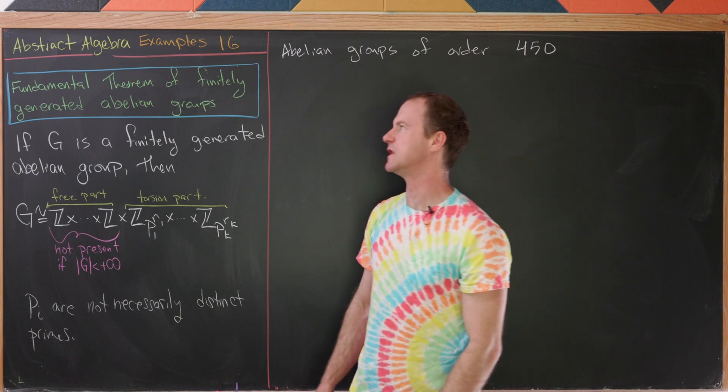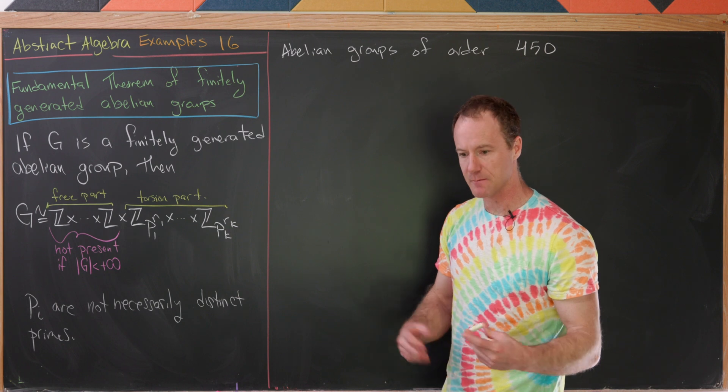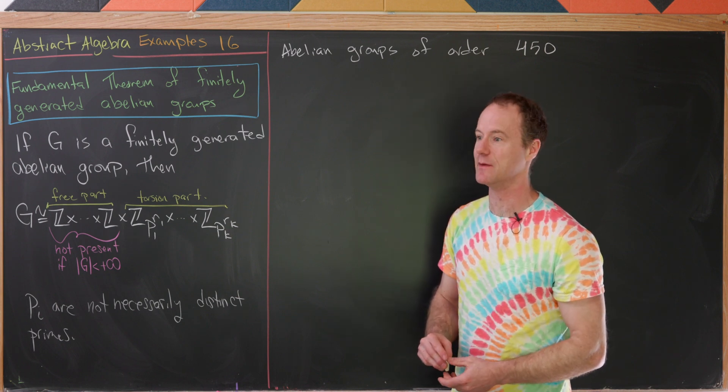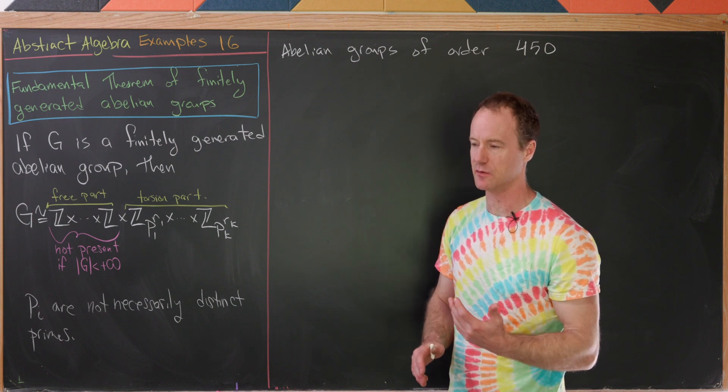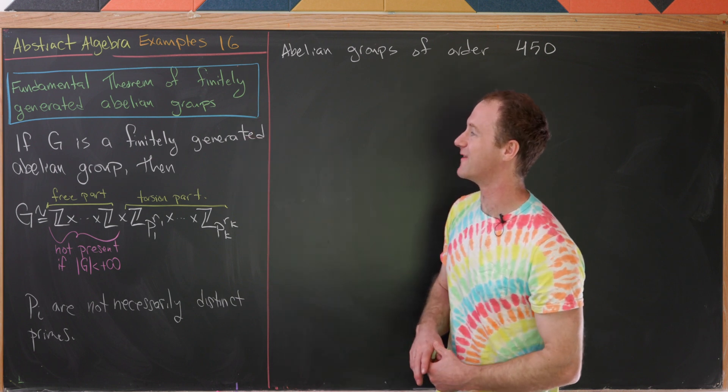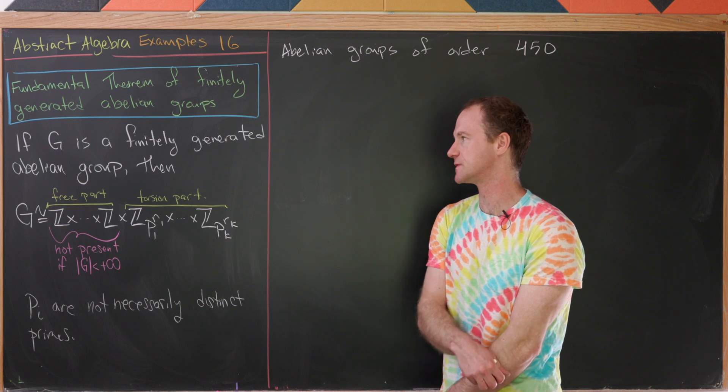This is the 16th example video on our series devoted to abstract algebra, and the main lecture video covered the fundamental theorem of finite abelian groups. Here we're going to extend that a little bit, without proof, to something called the fundamental theorem of finitely generated abelian groups, and then look at some examples.